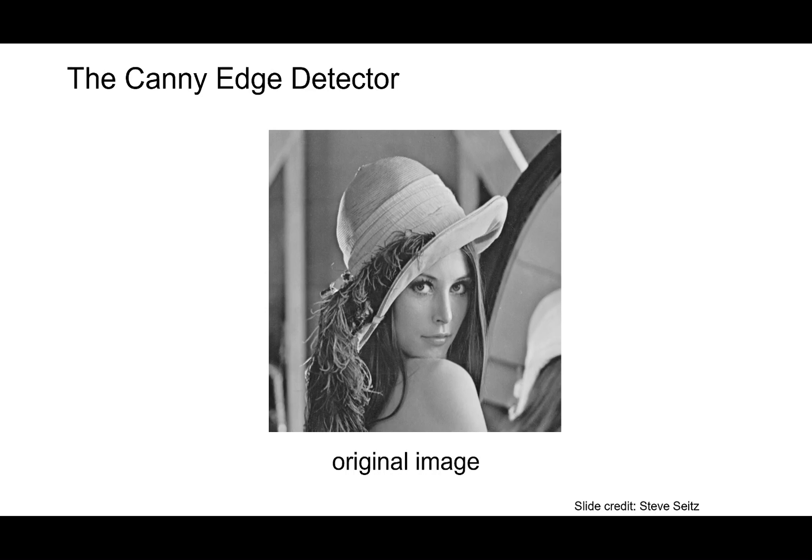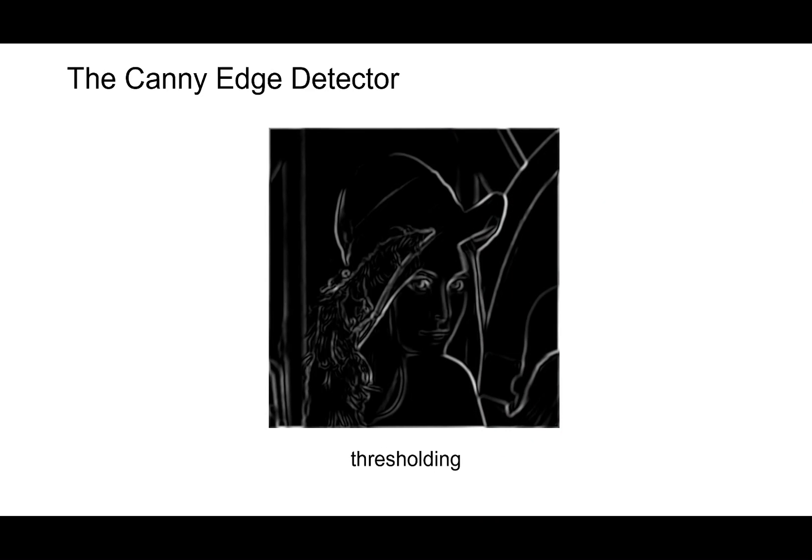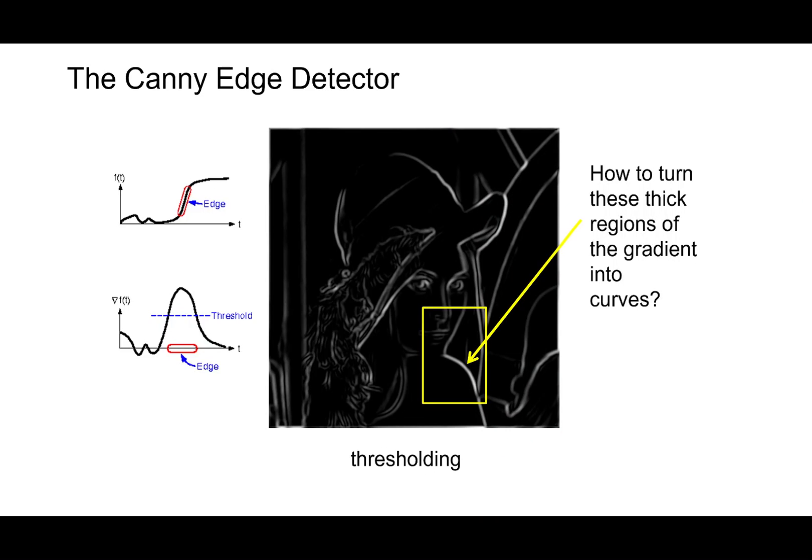You start with an original image and then you compute the gradient and what is plotted here is the norm of the gradient. You can see some edges are there which are not very strong. Maybe we can get rid of them by thresholding. So after thresholding, we notice that edges are thick, still thick. We need to convert these thick regions into single pixel wide curves.